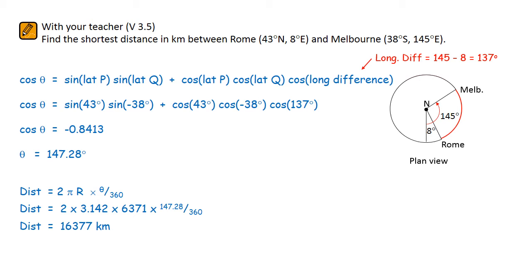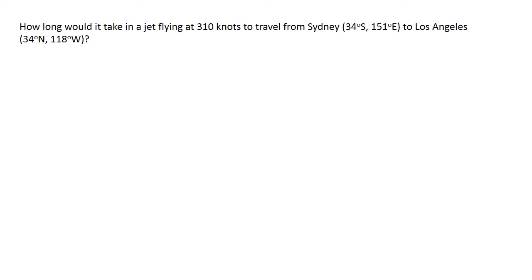Our final challenge involves finding the time taken to fly from Sydney to Los Angeles. The first thing that you should notice in this question is that the speed of the jet was given to you in knots. If the speed is in knots then the distance should be worked in nautical miles.